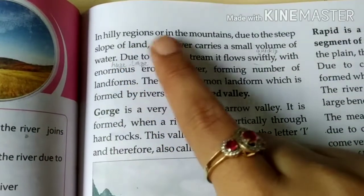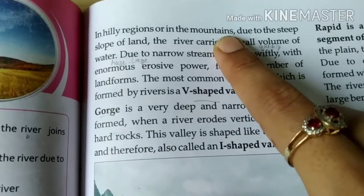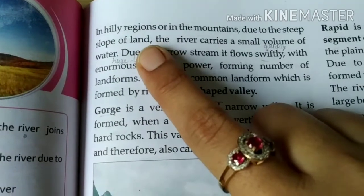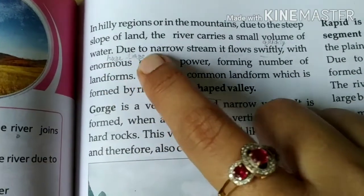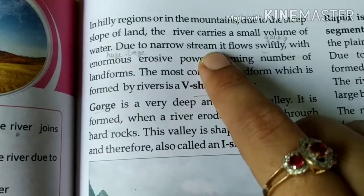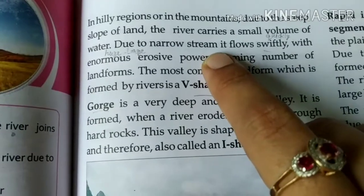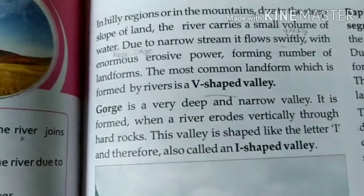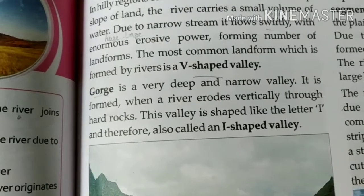In hilly regions, the erosion is vertical because the slopes of the land are steep and the river carries a small volume of water. The water flows at very high speed, which causes high-speed erosion. So the landform created is the V-shaped valley.